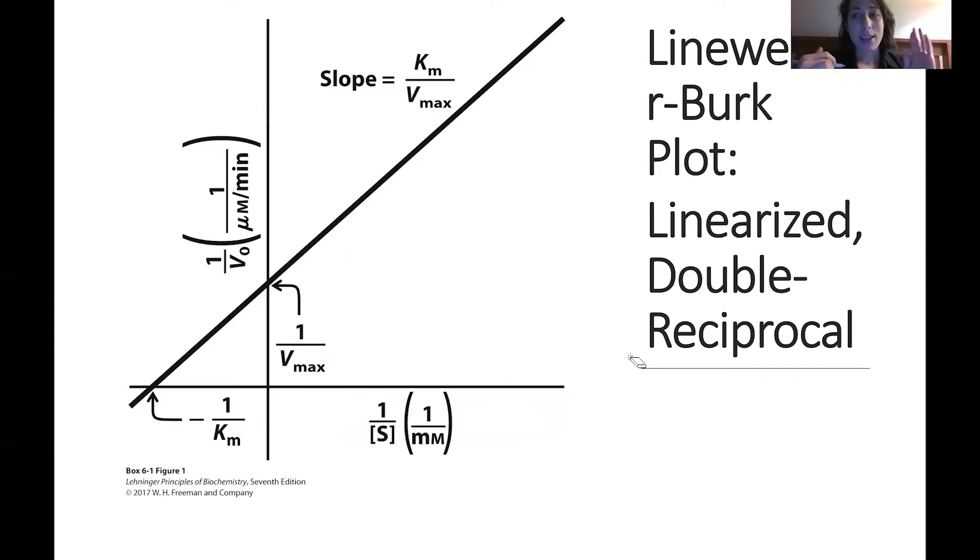Here, instead of the units for x and y being x equals concentration of substrate and y equals the velocity or the rate, here we have x being 1 over the concentration of substrate and y being 1 over the velocity or the rate. So this is where the reciprocal word comes from because we're just taking the x and y axis and taking the reciprocal, making them 1 over what they were. These generate a linear line when you take the reciprocal.